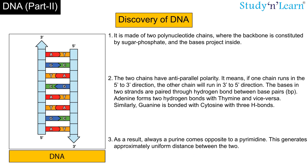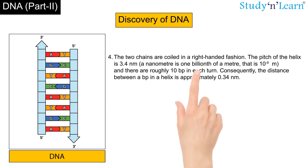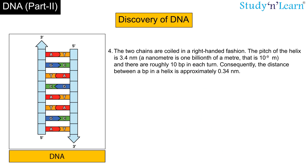As a result, always a purine comes opposite to a pyrimidine, which generates approximately uniform distance between the two strands. The two chains are coiled in a right-handed fashion. The pitch of the helix is 3.4 nm — where a nanometer is one billionth of a meter, that is 10 to the power of minus 9 meters — and there are roughly 10 base pairs in each turn. Consequently, the distance between a base pair in the helix is approximately 0.34 nm.